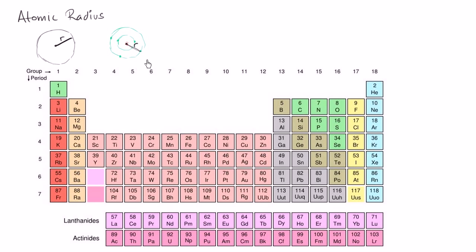That would work except for the fact that this is not the right way to conceptualize how electrons move or how they are distributed around a nucleus. Electrons are not in orbits the way that planets are in orbit around the sun, as we've talked about in previous videos. They are in orbitals, which are really just probability distributions of where the electrons can be, but they're not that well-defined.